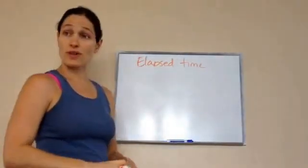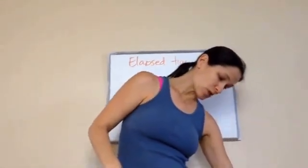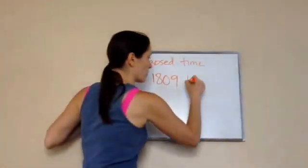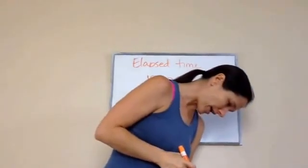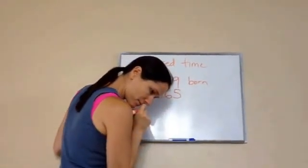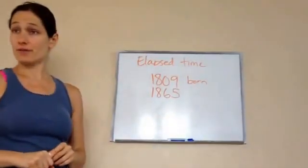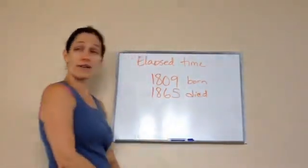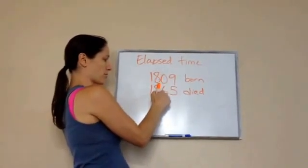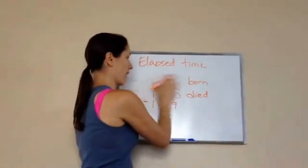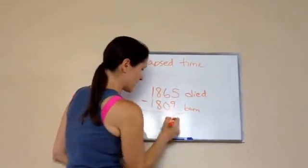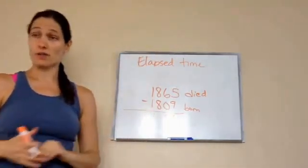This problem has to do with Abraham Lincoln. Abraham Lincoln was born in 1809 — I thought 1978 was long ago! He died in 1865. They want to know how many years did he live? You put the bigger number on top: 1865 minus 1809. He ended up being 56 years old. So he died when he was 56. That is Lesson 13.